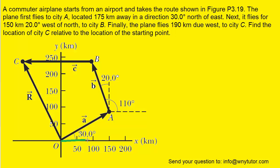For vector A, we can extend a line from the point where vector A begins in the positive X direction. This will turn out to be the X component of vector A. We can also extend a line in the positive Y direction, which will turn out to be the Y component of vector A. We can attach arrowheads to show that the X component points to the right and the Y component points upward. Vector A has a length of 175 kilometers, and that is essentially the hypotenuse of a right triangle.